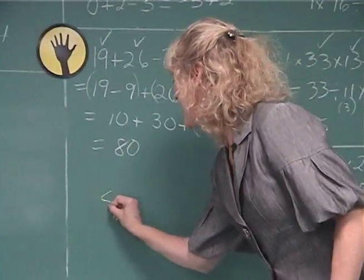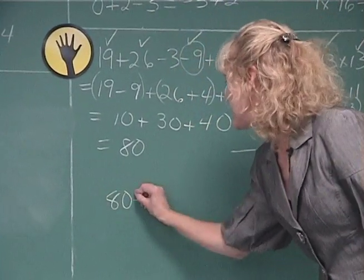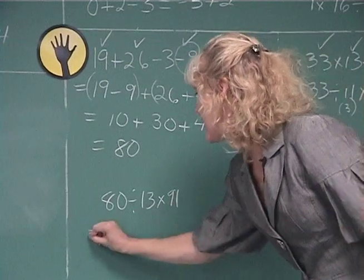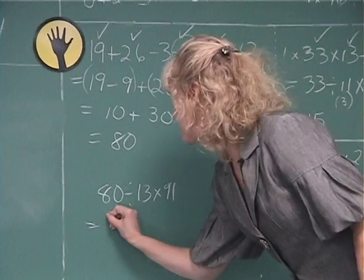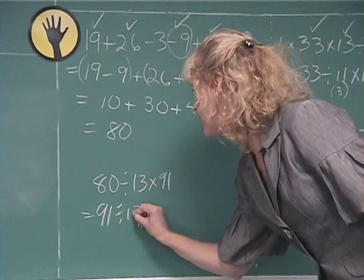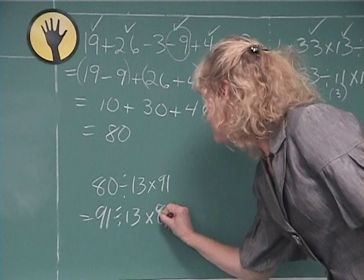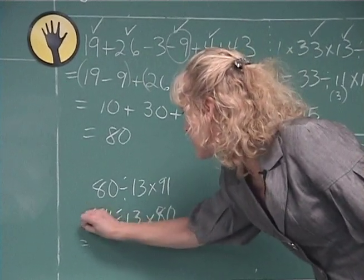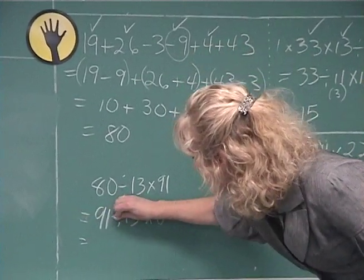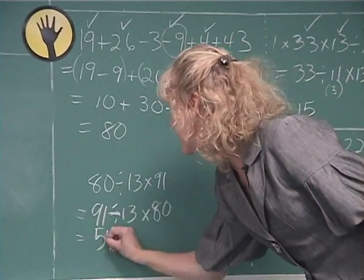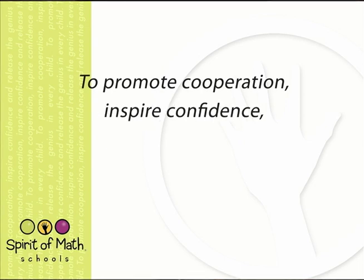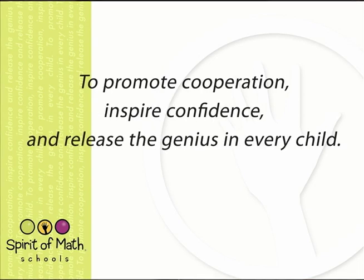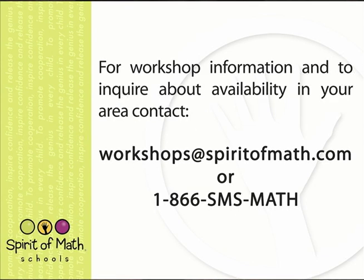One more, just for good luck. Let's take 80 divided by 13 times 91. Again, calculating from left to right doesn't work too well, so you can do 91 first, divide that by 13, and multiply that by 80. And 91 divided by 13 is just 7 times 80 is 560. Thank you.